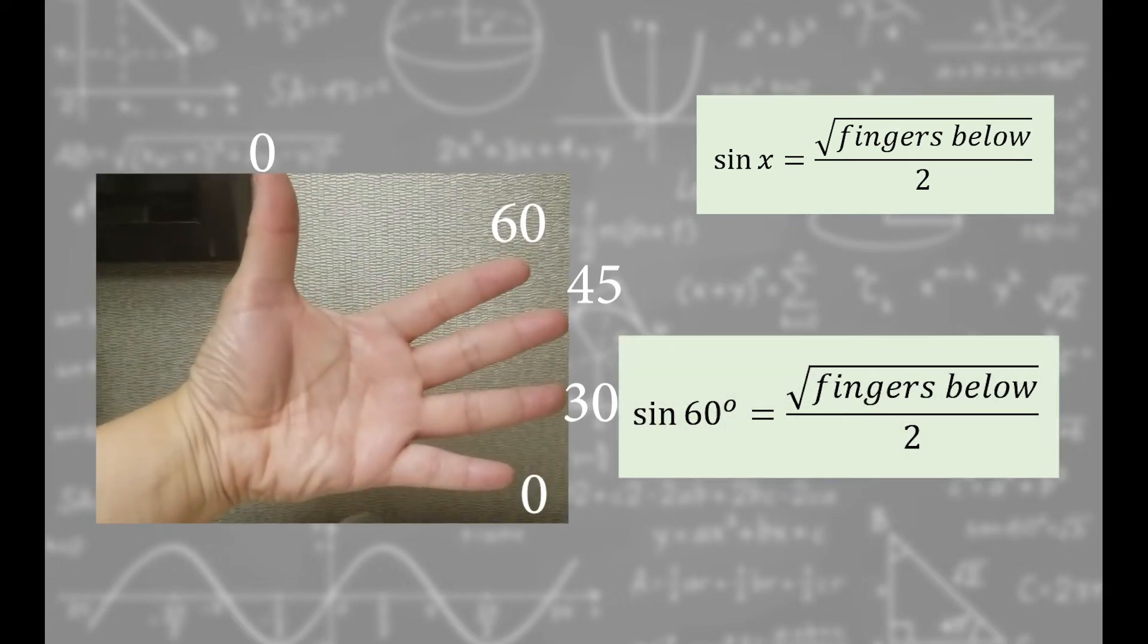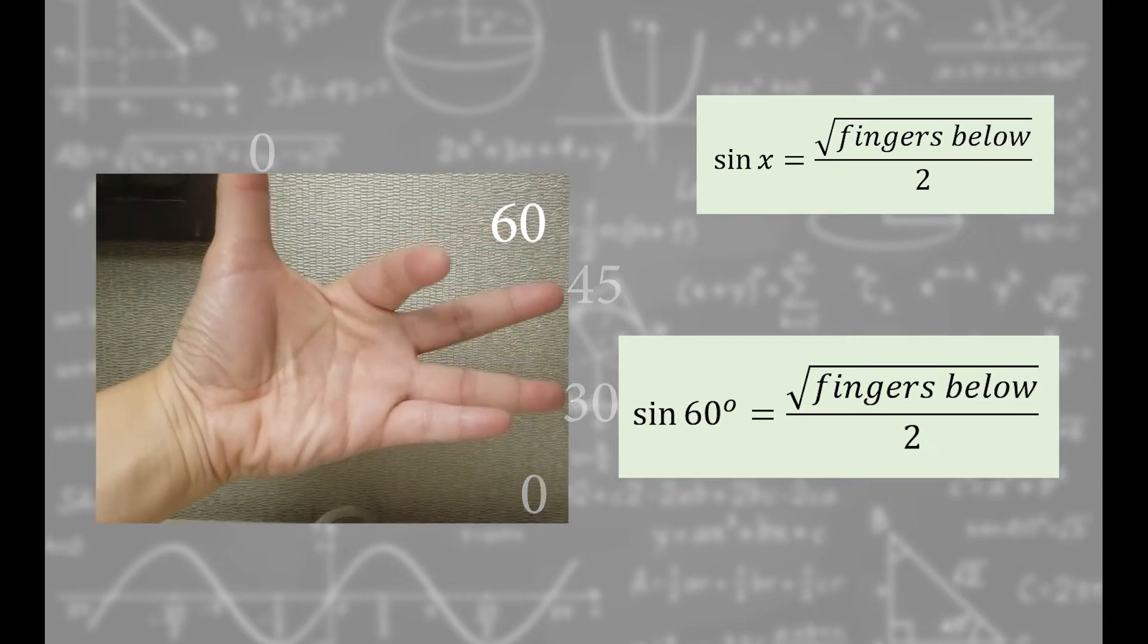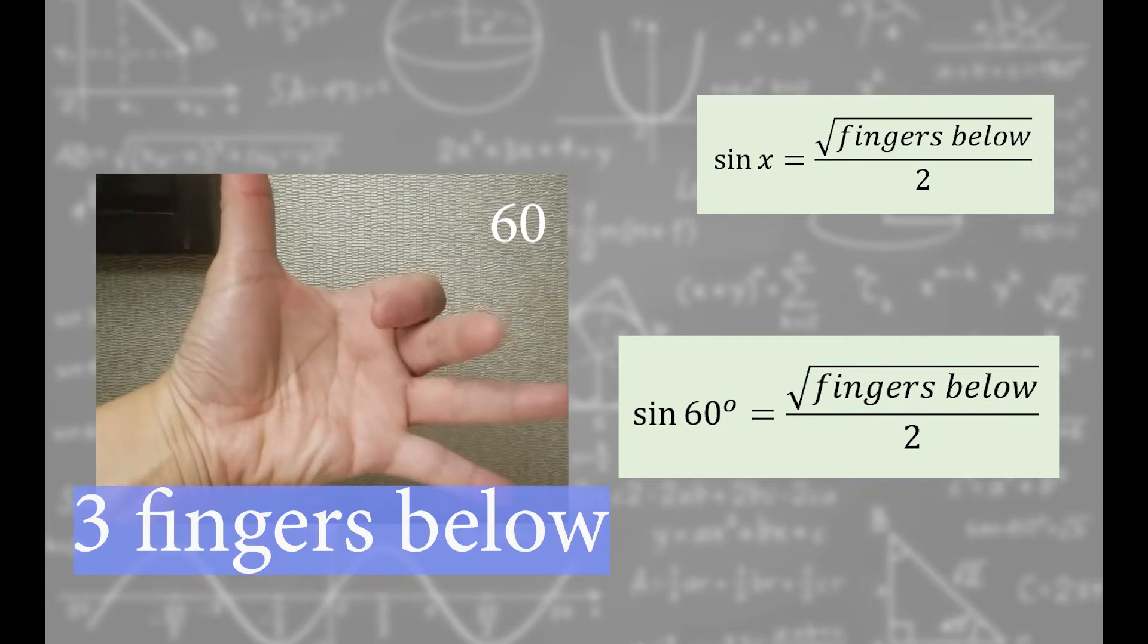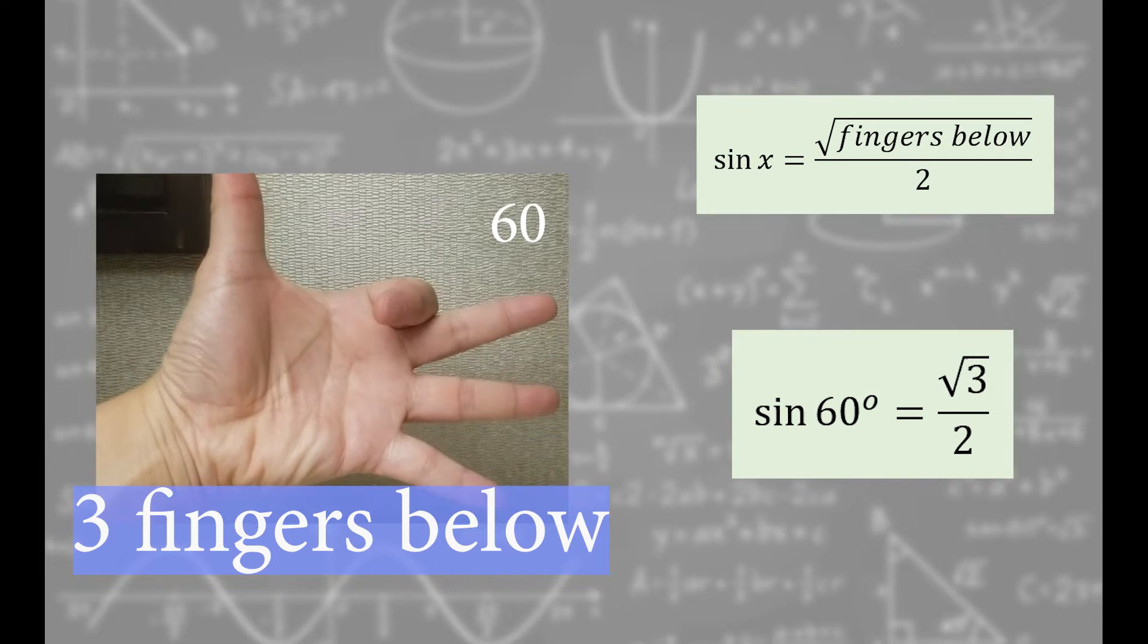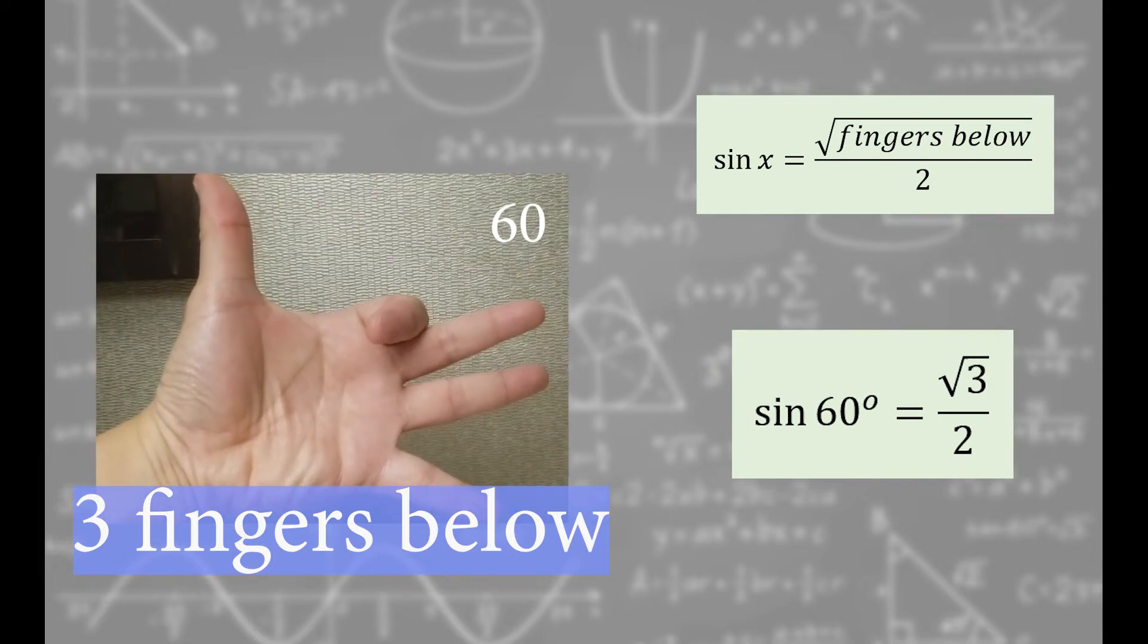Sine of 60 degrees. This finger is 60 degrees. Bend it in to get it out of the way. There are three fingers below it. So sine of 60 degrees is equal to square root of 3 over 2. There. Is it not easy?